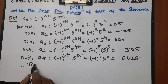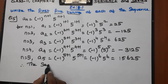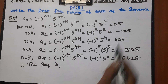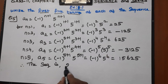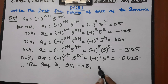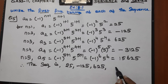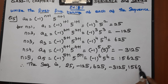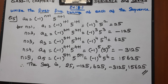Therefore the sequence of the given nth term is: 25, minus 125, 625, minus 3125, minus 15625. This is the answer.